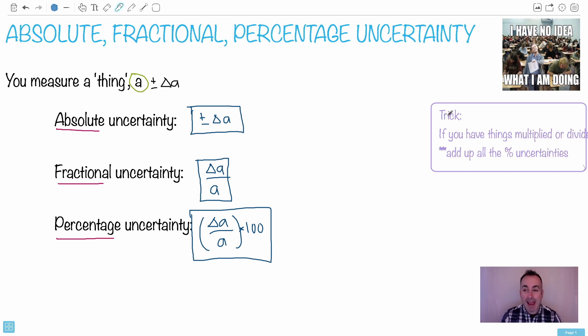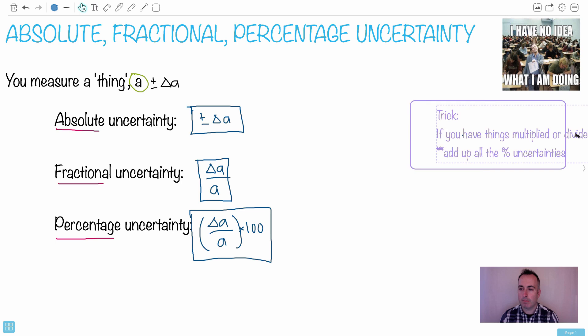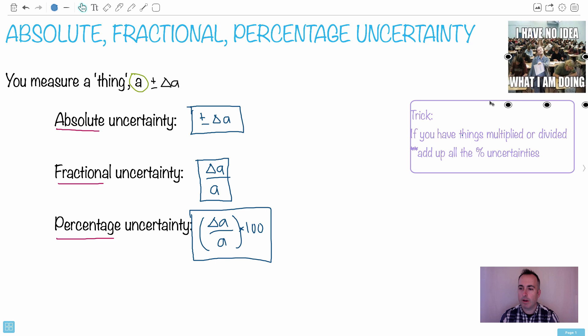So a nice trick is that if you have things that are multiplied or divided, and when I say things, that could be really a lot of different things, then what you end up doing is you can add up all the uncertainties on whatever value you're measuring.